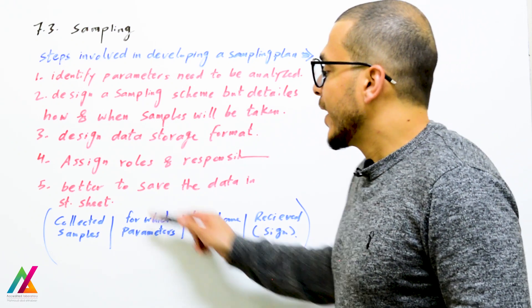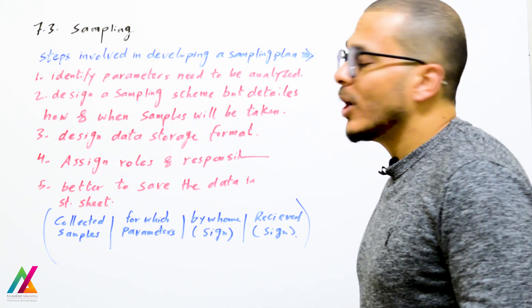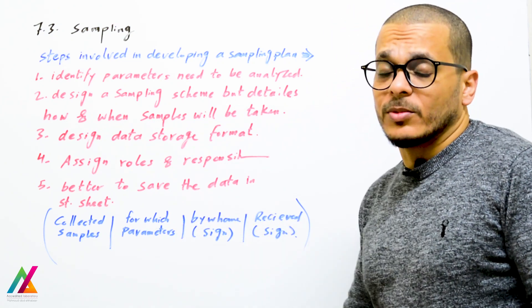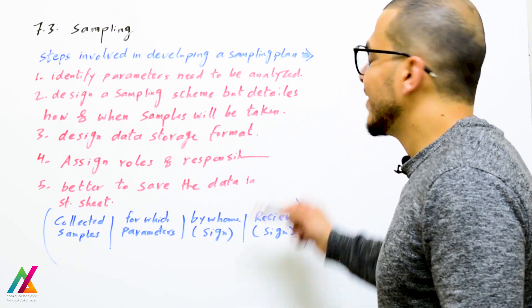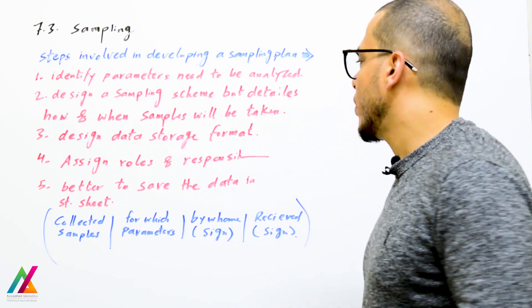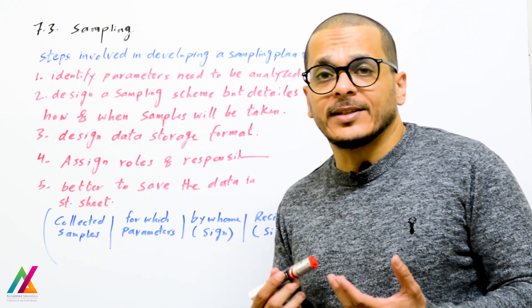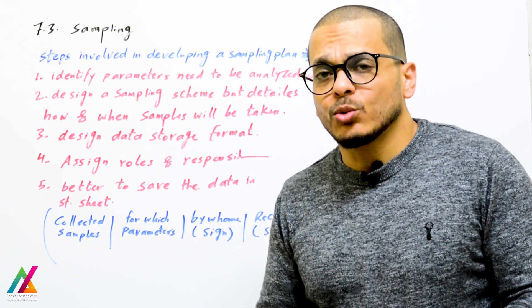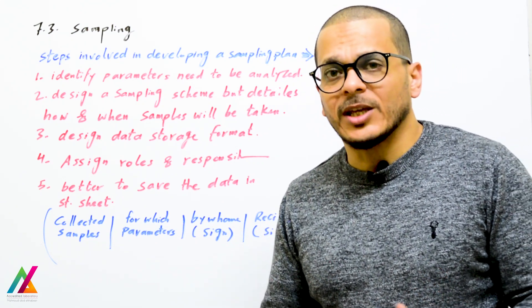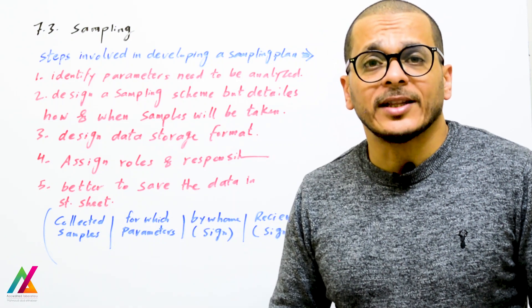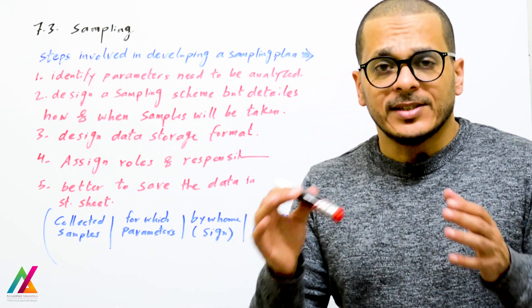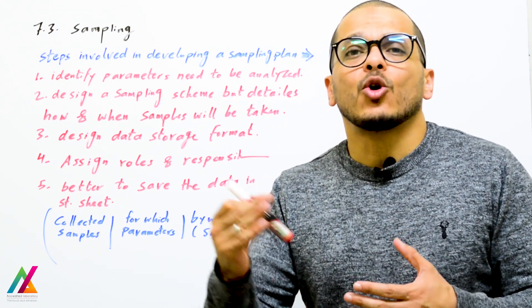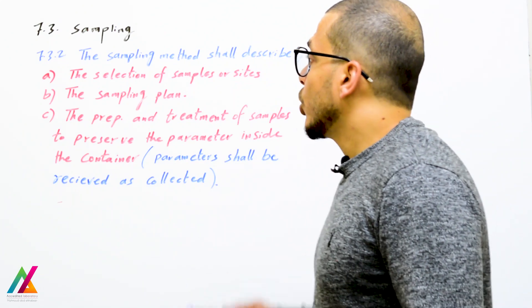Assign roles and responsibilities — who is responsible for what. It is better to save data in a statistical Excel sheet, recording collected samples, parameters, who performed sampling with signature, and who received samples with signature. The sampling plan and procedure shall be available at the site. If this is difficult, the lab can keep sampling plan and procedure on a shared folder accessible via LIMS from anywhere.